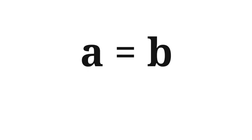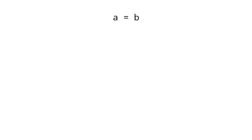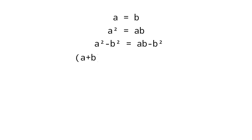Method 1: using the property a equals b. If a equals b, then a squared equals ab. Subtracting b squared from both sides: a squared minus b squared equals ab minus b squared. We can write a squared minus b squared as (a plus b)(a minus b), so (a plus b)(a minus b) equals b(a minus b).